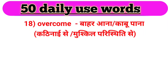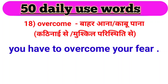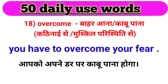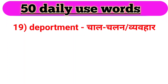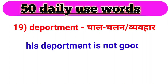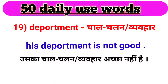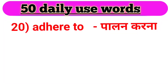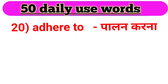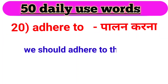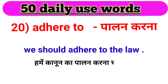Next word, we have overcome. Overcome ka matlab hota hai bahar aana ya kabu paana. For example: You have to overcome your fear. Aapko apne dar par kabu paana hoga. Next word, we have deportment. Deportment ka matlab hota hai chaal-dhaal ya vyavhar. For example: His deportment is not good. Uska chaal-dhaal ya vyavhar achha nahi hai. Agla hamaara ek phrasal verb hai — adhere to. Adhere to ka matlab hota hai paalan karna. For example: We should adhere to the law. Hame kanoon ka paalan karna chahiye.